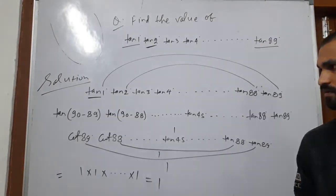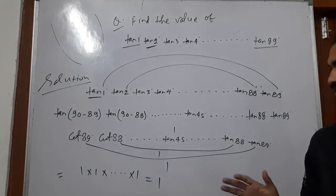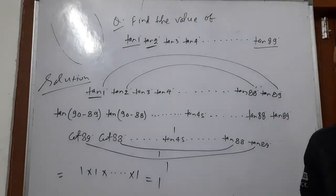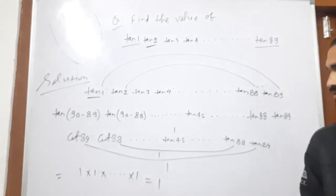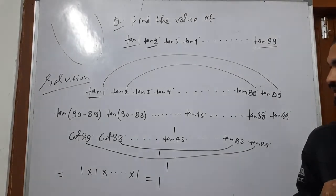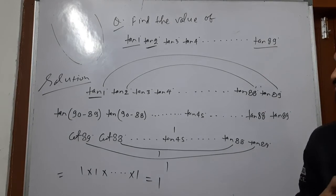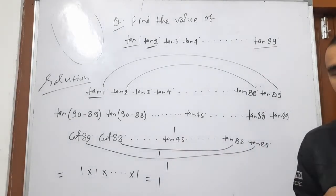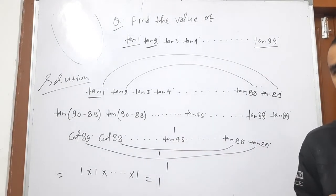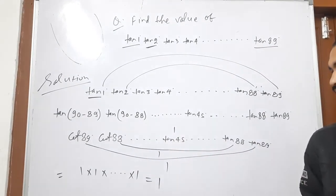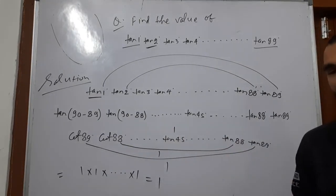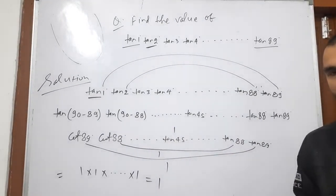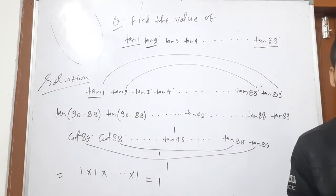This is a very, very easy problem. The complementary rule and the 90 minus rule is used. After that, it is a very, very easy problem.